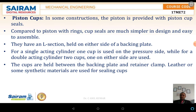For a single acting cylinder, one cup is used on the pressure side, while for a double acting cylinder, two cups are used on either side. The cups are held between the backing plate and the retainer clamp. Leather or some synthetic materials are used for the sealing cups.